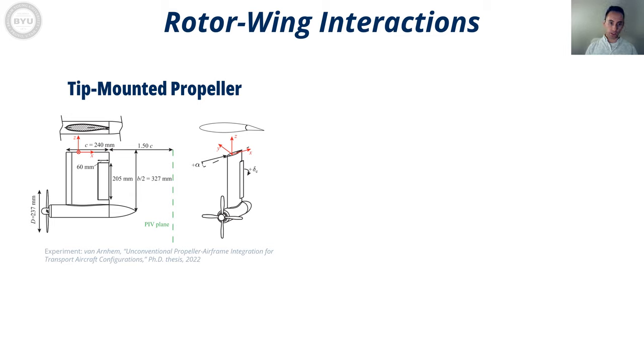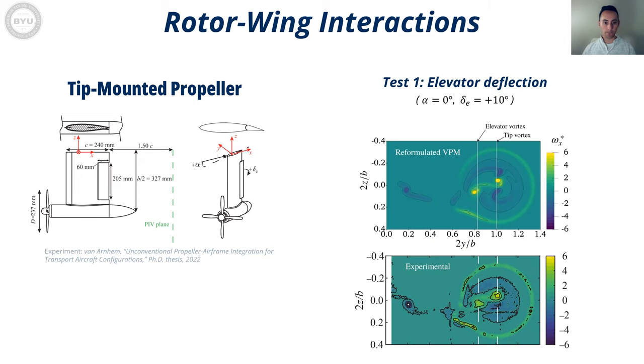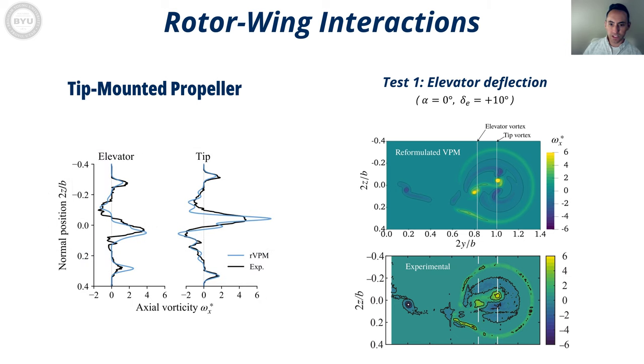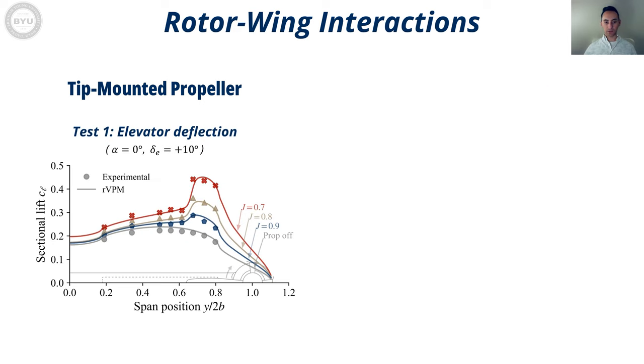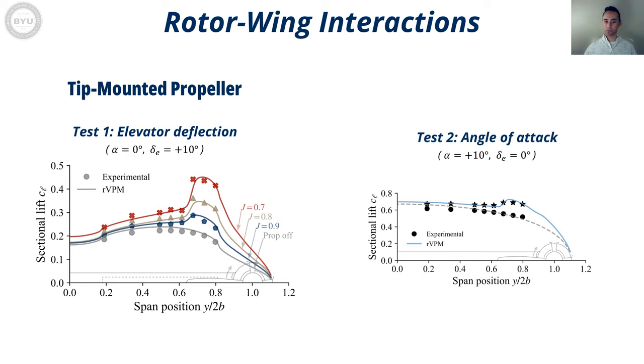Then, we placed a wing in the wake of the propeller, resembling a tailplane with tip-mounted propellers. The wake in our meshless LES matched the experimental PIV very well, which gives us confidence that our simulation is capturing the right physics that drive the interactions. Then, we validated the loading on the wing with the propeller at different thrust settings and an angle of attack, finding excellent agreement with the experiment.